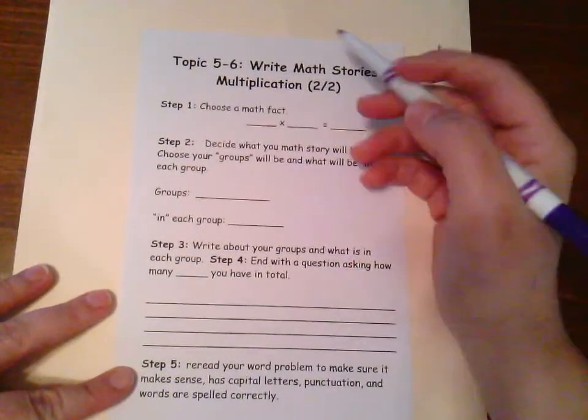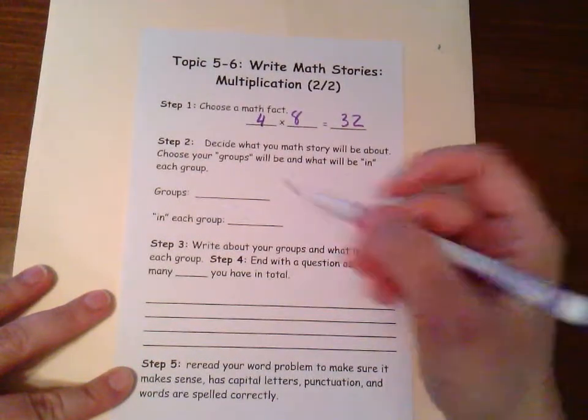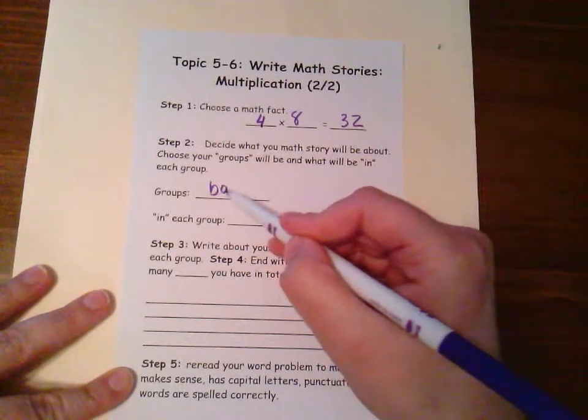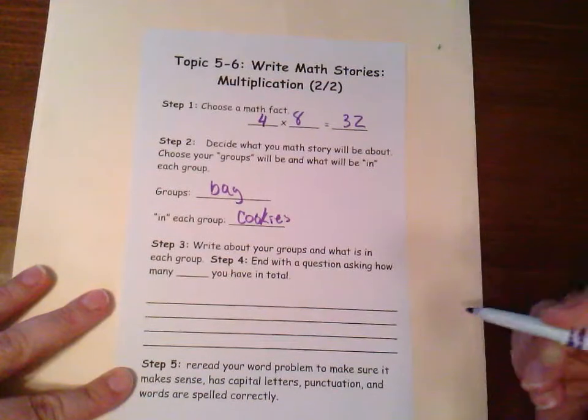So again, choosing our fact, I'm going to choose four times eight is 32. Next, I have to choose what my groups are going to be. I'm going to have my groups being bags, and I'm going to put cookies in those bags.